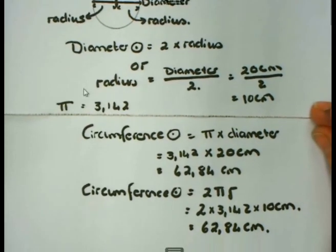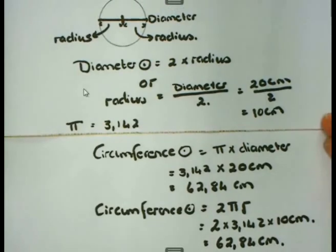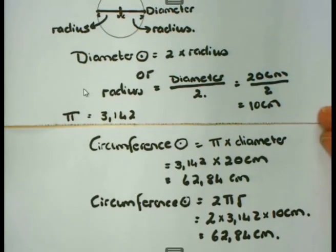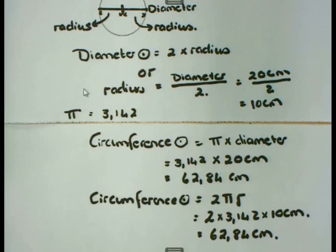So in short, when we work out the perimeter, you will be given the formulae. You need to substitute the values that you have into the correct formulae. And this is all about perimeter.